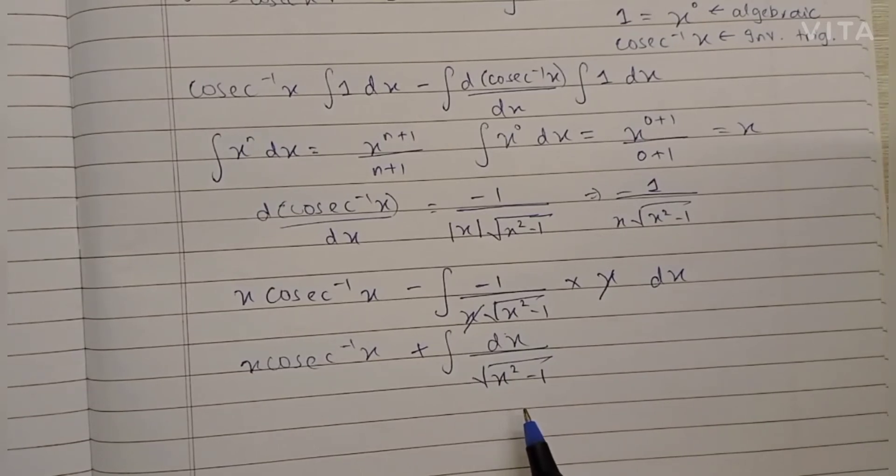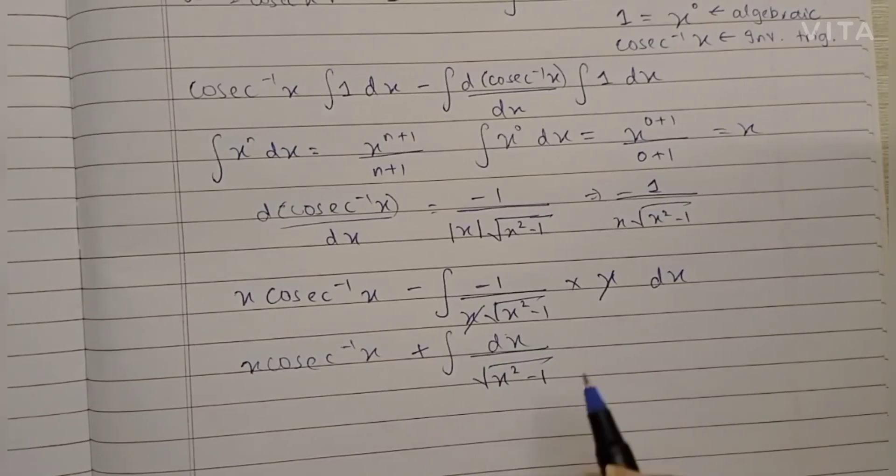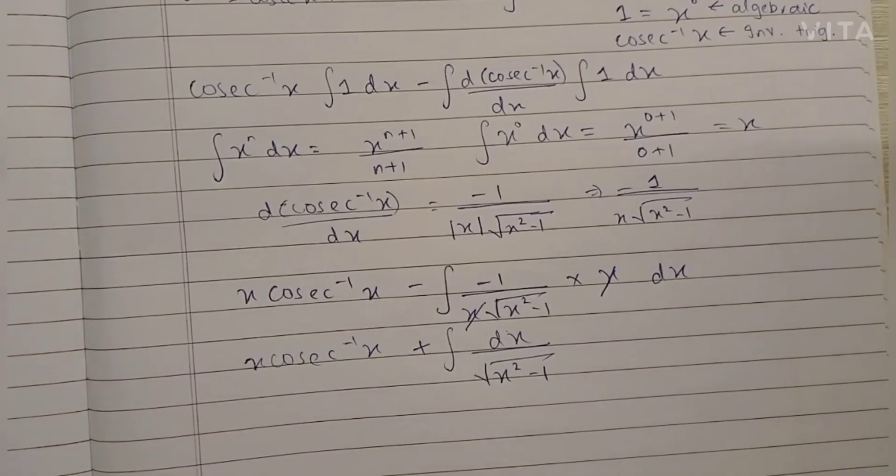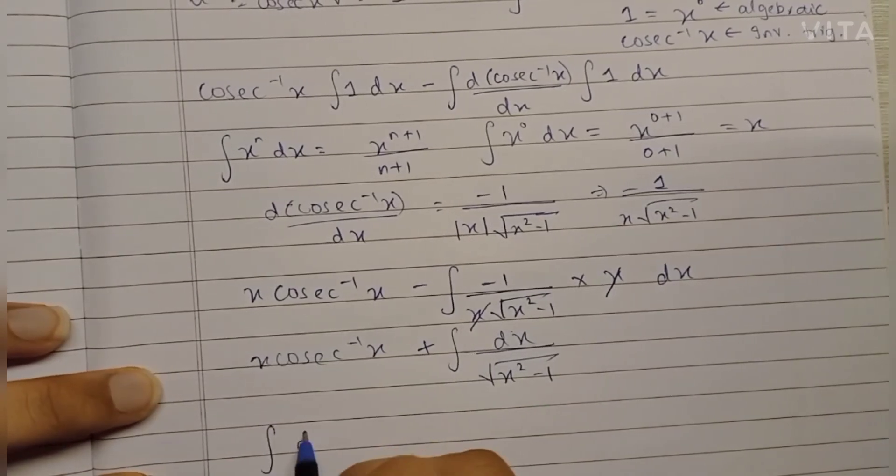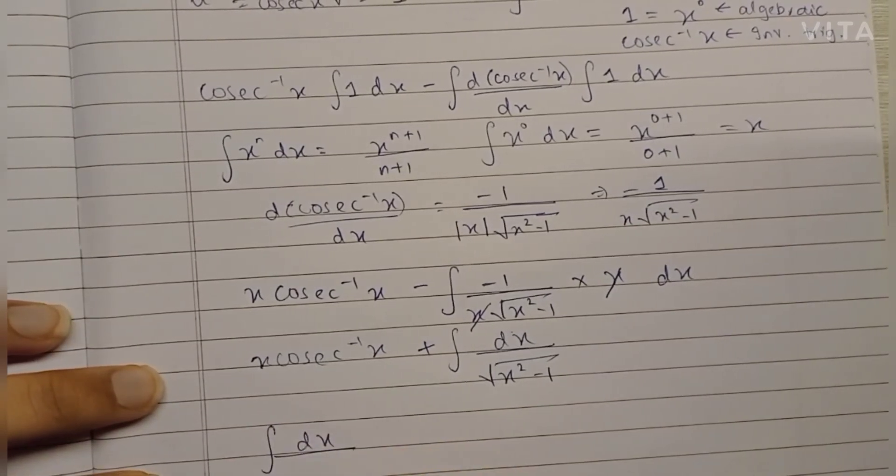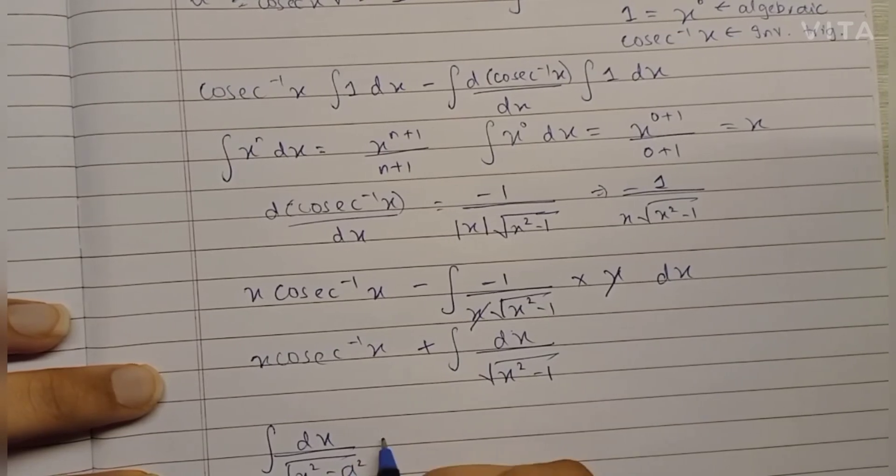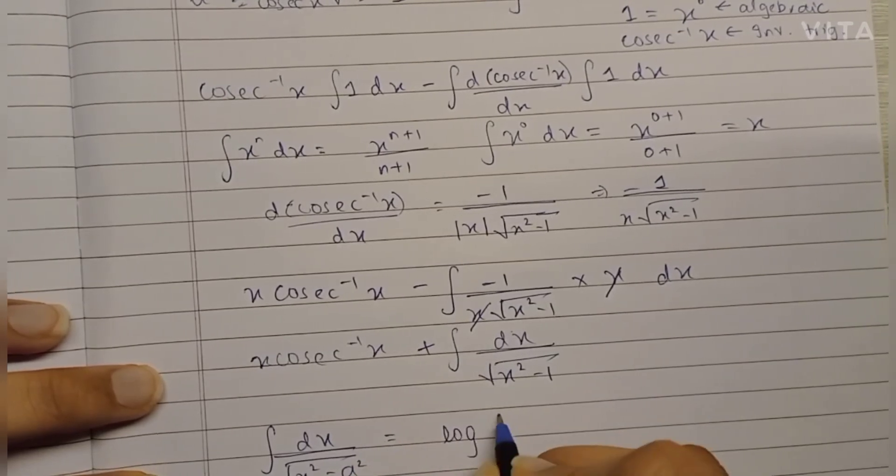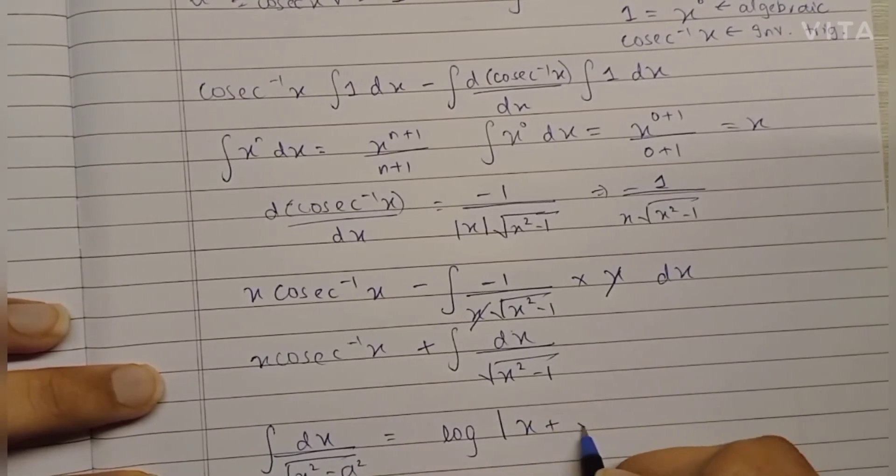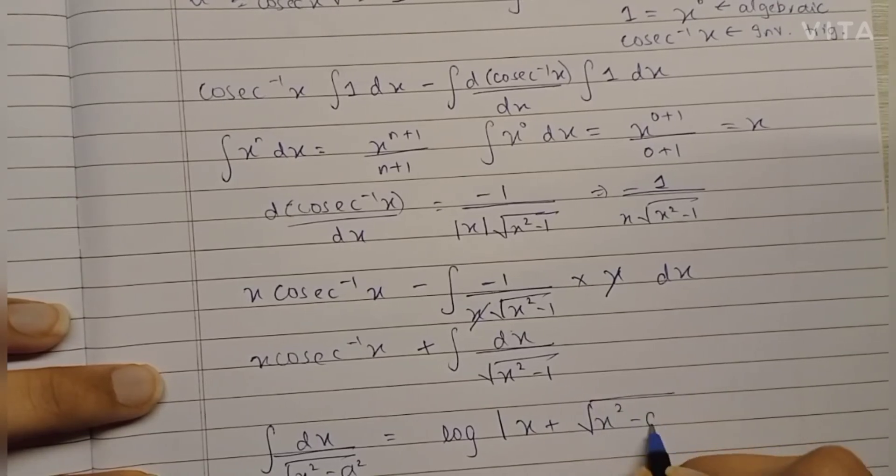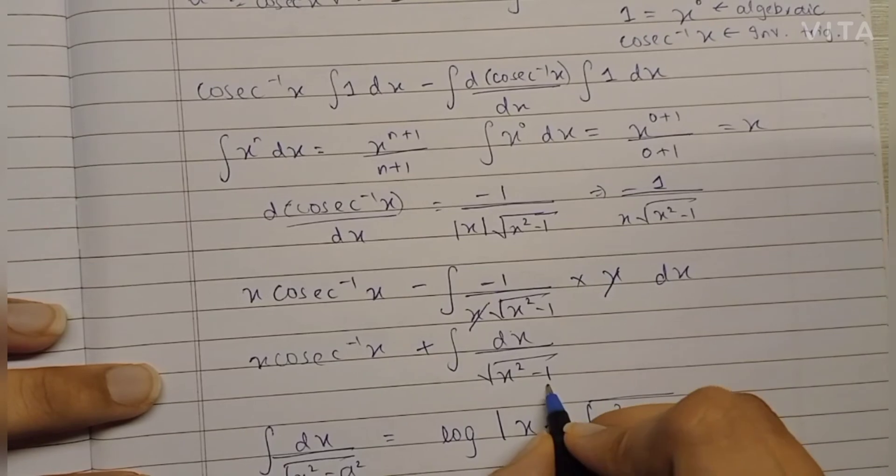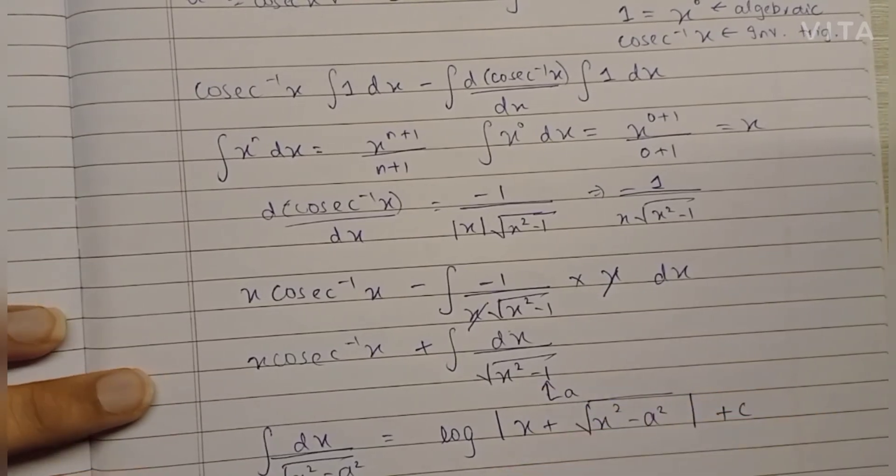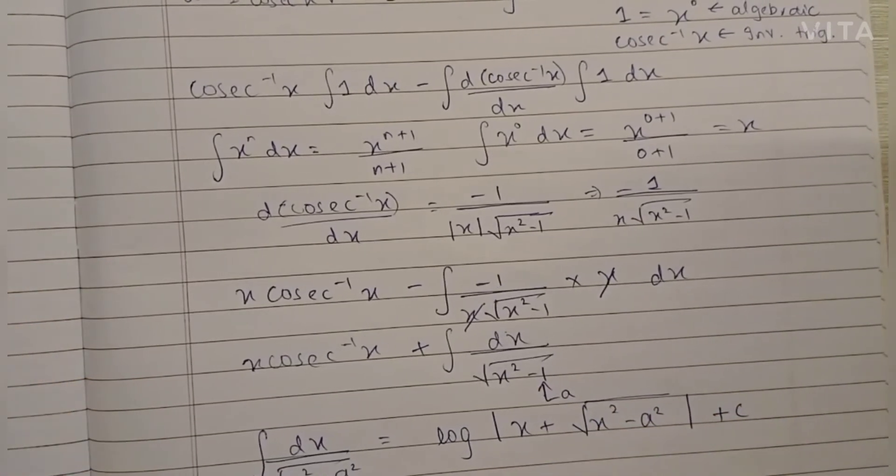If you look at the 15th chapter of the OP Malhotra textbook, you will see the formula for dx upon integration of dx upon √(x² - a²) is log(x + √(x² - a²)) + C, of course. So here our a is 1 because a² again will be 1² which is 1 itself.